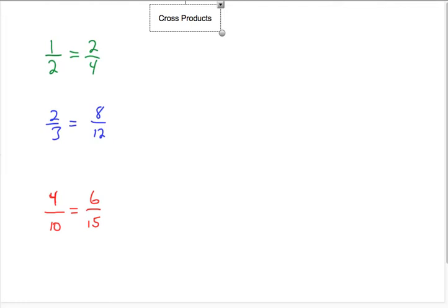So now I want to talk about cross products. As you can see, all these fractions are equal: 1 half is equal to 2 fourths, 2 thirds is 8 twelfths, and 4 tenths is the same as 6 fifteenths. So cross products, which we've talked about in the past, whenever two fractions are equal, or whenever we have a proportion, the cross products will always be equal.